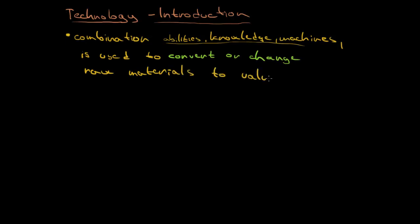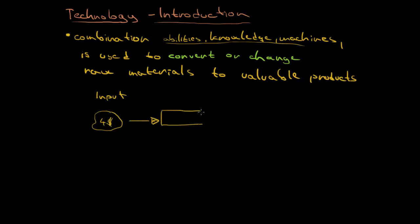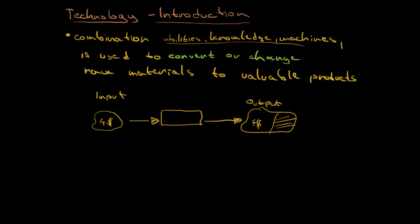That is the point why our company exists. Imagine there is some input to our company — maybe it is worth four dollars. It comes into our company, and what comes out — the output — must be worth more. The company adds additional value to the product. So we are converting or changing the raw materials to valuable products.